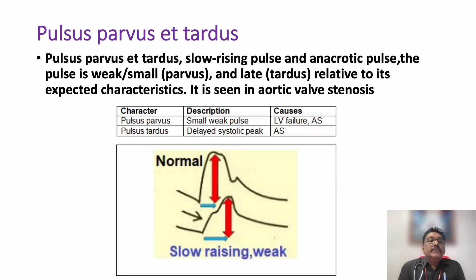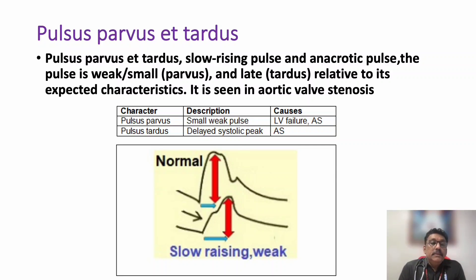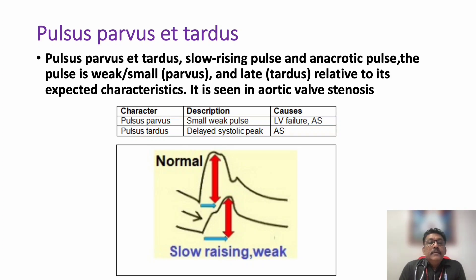Pulsus parvus et tardus — slow-rising, low-volume pulse — is very important in aortic stenosis. Pulsus parvus means a small weak pulse; pulsus tardus means delayed systolic peak. The delayed systolic peak is a classical finding because during left ventricular systole there is a delay in opening of the stenosed aortic valve, and pulse volume is always low due to fixed cardiac output, together producing pulsus parvus et tardus.